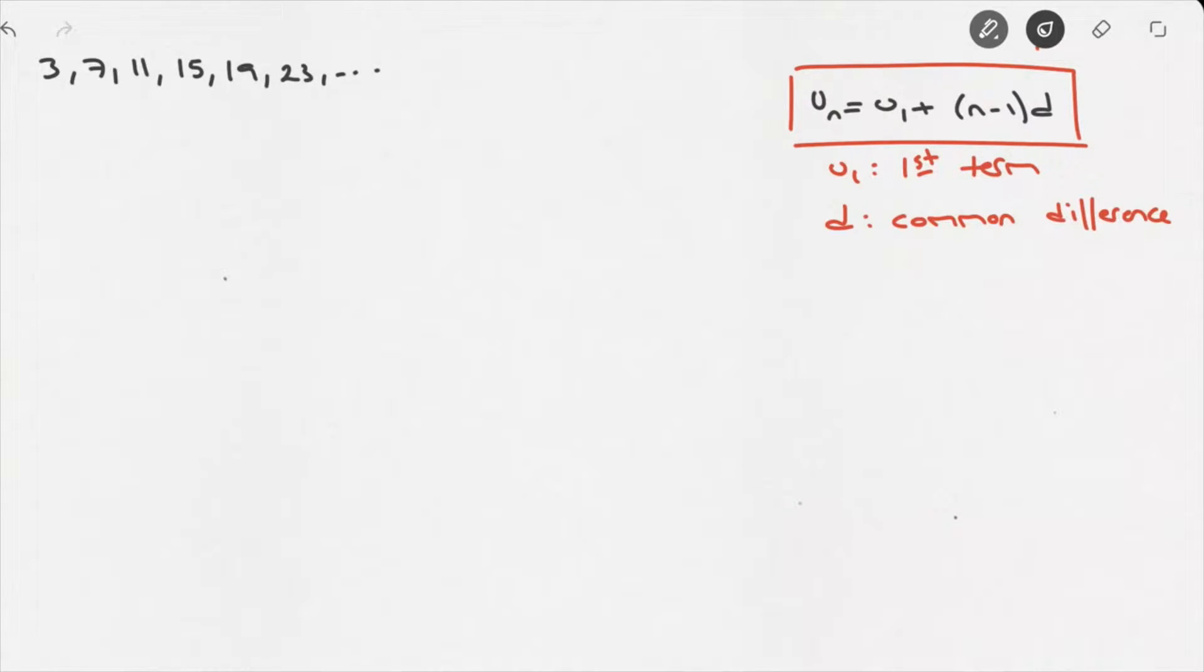So let's see how that's done with a couple of examples. Consider the following sequence of numbers: 3, 7, 11, 15, 19, 23, and so on. Well, looking at this sequence going from left to right, it's quite clear that it's an arithmetic sequence, since we're always adding the same amount as we go from one term to the next.